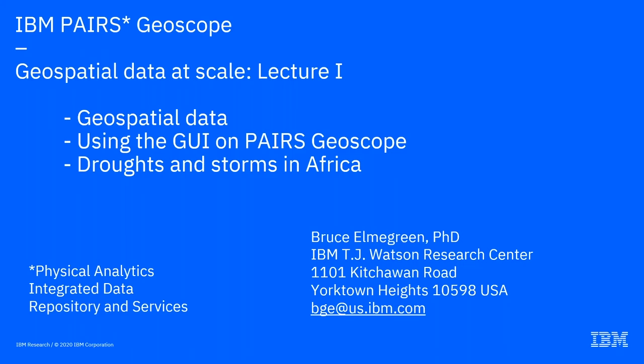Good afternoon, everybody. My name is Clara Bocchino from the Sustainable Water Partnership and coordinator for the Big Data Analytics and Transboundary Water Collaboration for Southern Africa. Thank you all for joining us for the second seminar in this series, produced by IBM Research and the Sustainable Water Partnership. Today we have Dr. Bruce Elmergreen, a research scientist in IBM Research based in New York. He has a PhD in astrophysics from Princeton, and he has authored over 700 papers. He currently works in a program called PAIRS, which he'll talk to us about.